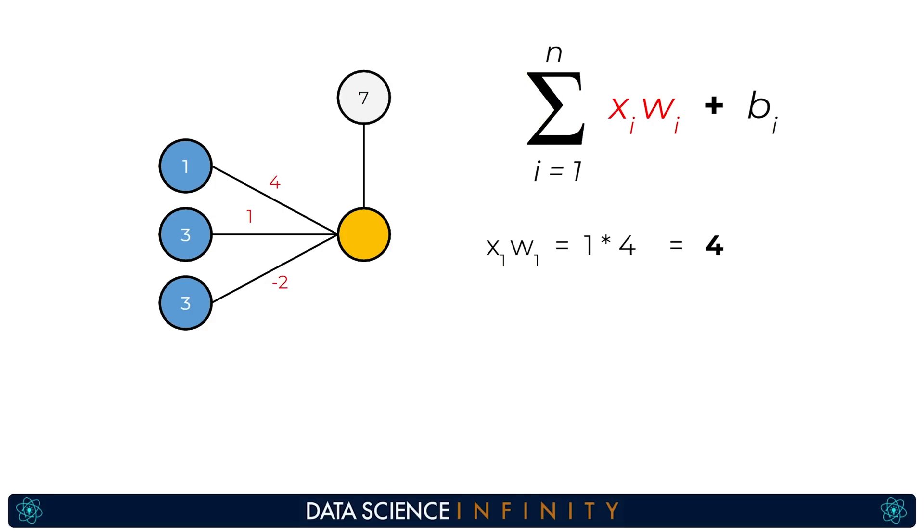So first things first we would multiply x1 by w1 so 1 multiplied by 4 which gives us 4. We would then do the same for x2 and x3 so 3 multiplied by 1 for x2 and w2 and then 3 multiplied by negative 2 for x3 and w3. After that as we spoke about before we would need to sum up those results and this would be 4 plus 3 plus negative 6 which equals 1. Finally we would add the bias value which was 7 giving a value for this neuron to hold of 8.